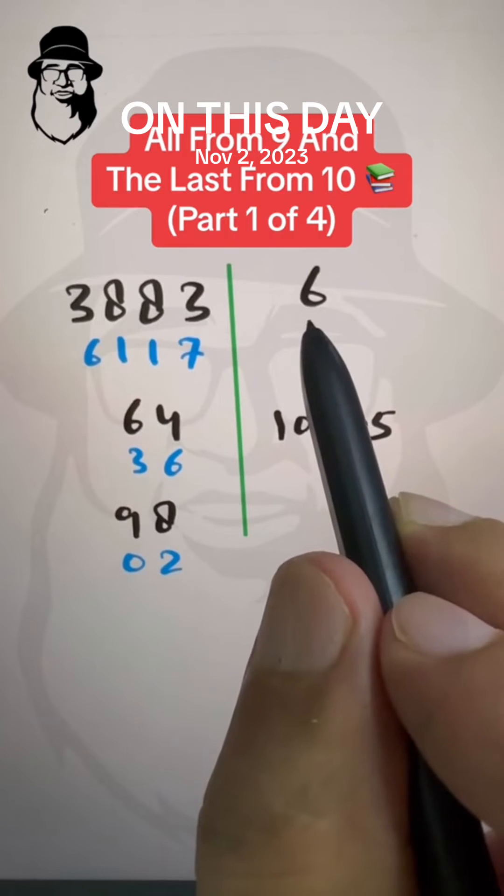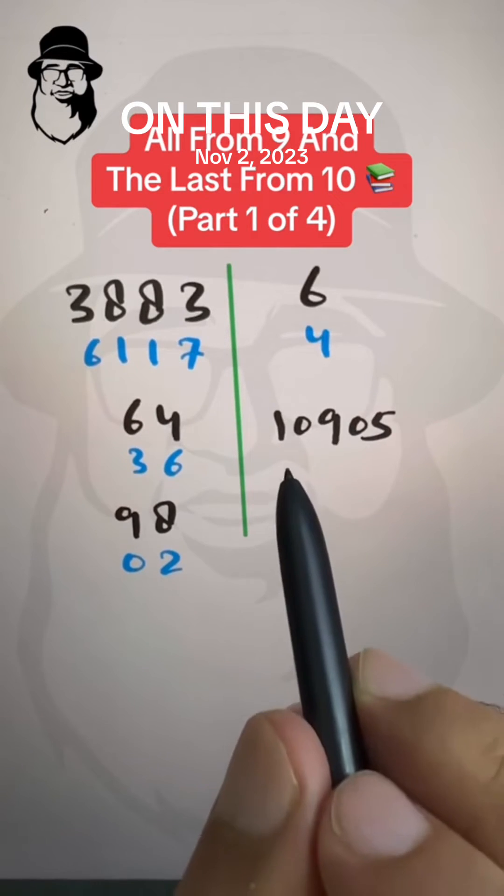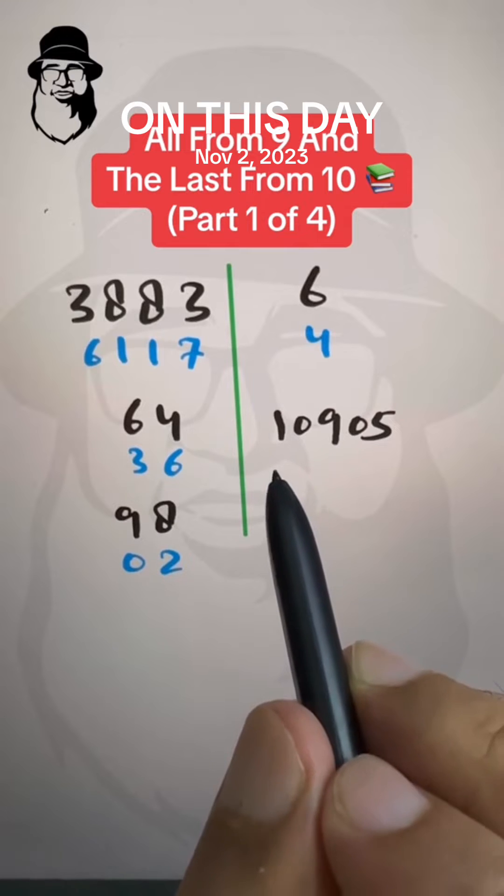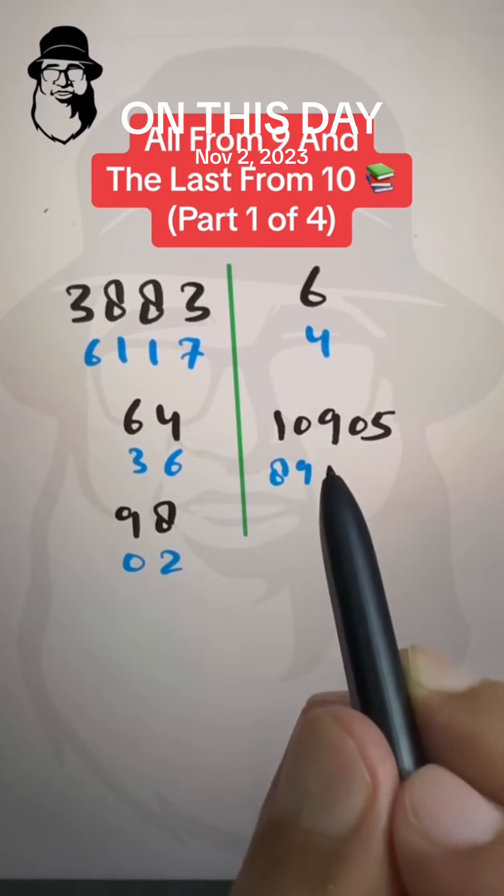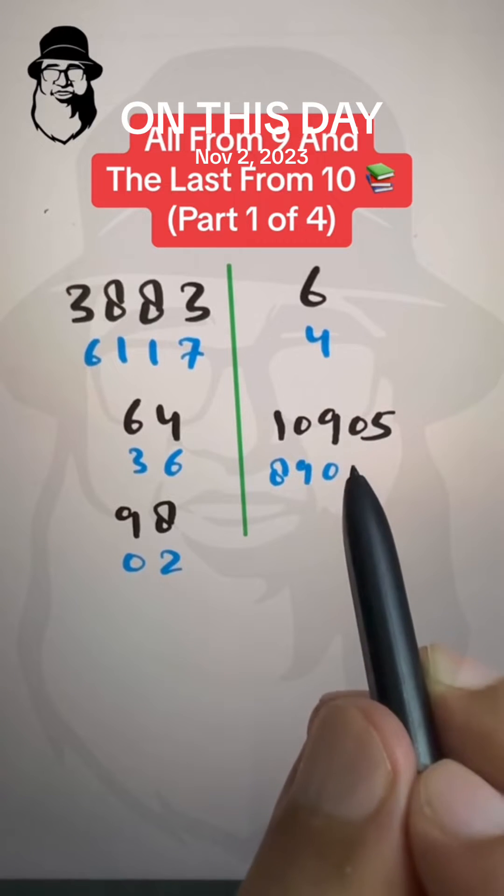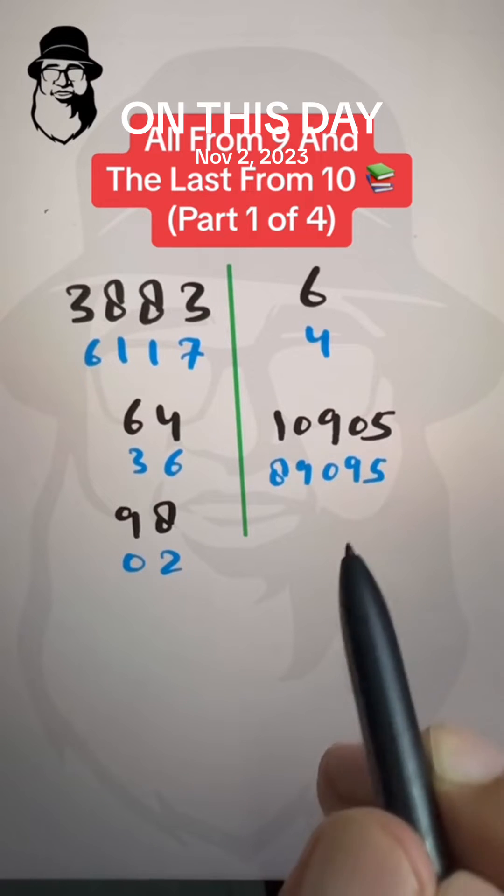Here, there is only 1 digit, so 6 from 10 is 4. And this 1 from 9 is 8. 0 from 9 is 9, 9 from 9 is 0, 0 from 9 is 9, and this 5 from 10 is 5.